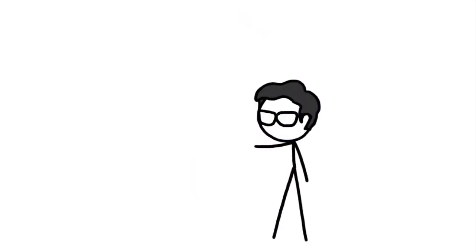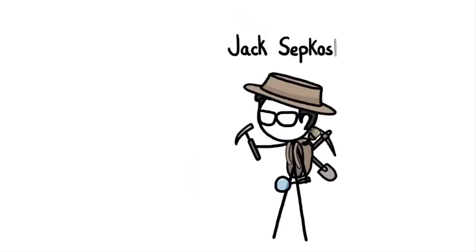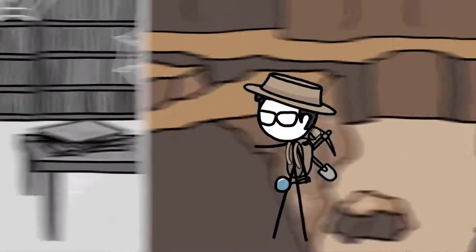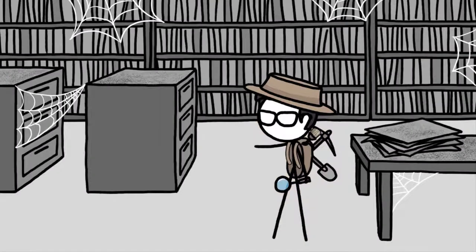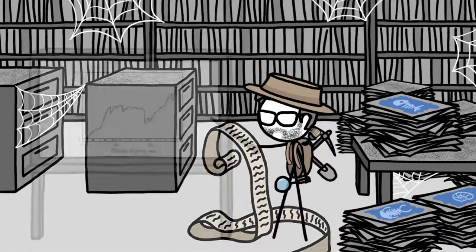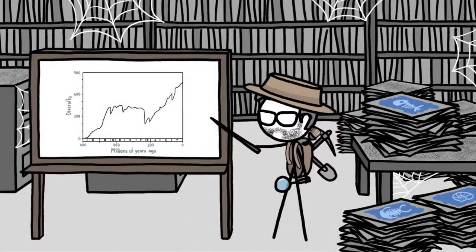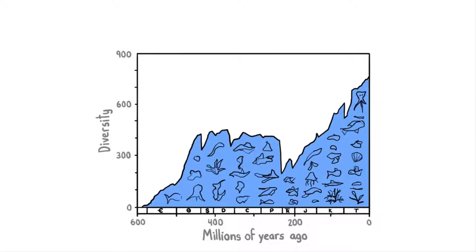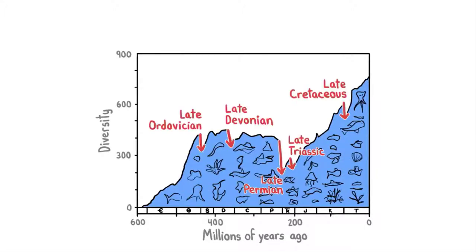In the 1970s, a scientist named Jack Sepkoski embarked on the most ambitious fossil hunt ever. But instead of digging in the dirt, he dug through dusty piles of academic research and scraped together a record of all the ocean-dwelling creatures known to science. That tedious work yielded perhaps the most famous chart in paleontology: a tally of marine life over time that revealed five catastrophic global biodiversity crashes in Earth's past.